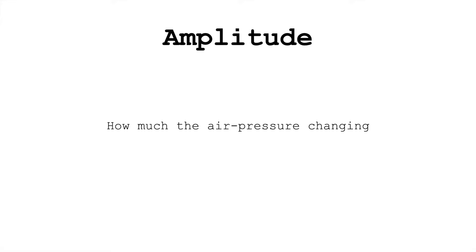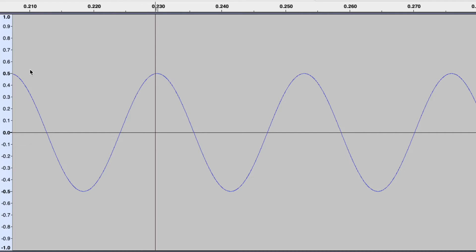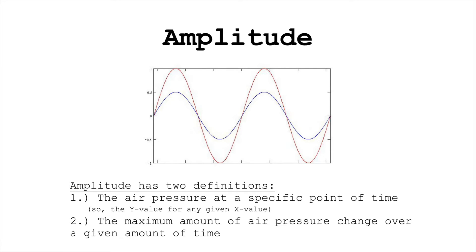The amplitude is how much the air pressure is changing, relatively. Amplitude has two definitions. One: the air pressure at a specific point in time — for example, at 0.23 seconds, there's an amplitude of 0.5. But amplitude also refers to the maximum amount of air pressure that changes over a given amount of time. So I can say the amplitude of the red waveform here is twice the amplitude of the blue one.